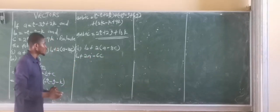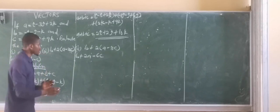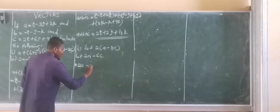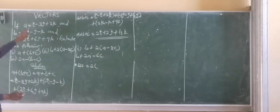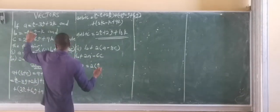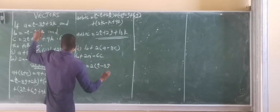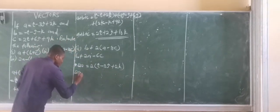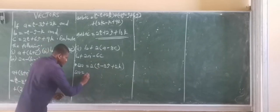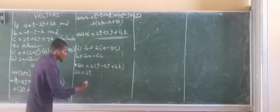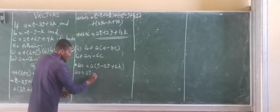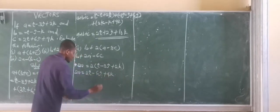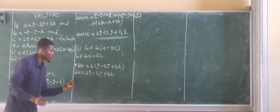So let's do this in detail. First of all, let's find 2A. 2A simply means 2 multiplied by vector A, and vector A is I minus 3J plus 2K. So therefore 2A is actually 2 times A, which gives us 2I, 2 times minus 3J gives us minus 6J, and 2 times plus 2K gives us 4K. So 2A is equal to 2I minus 6J plus 4K.